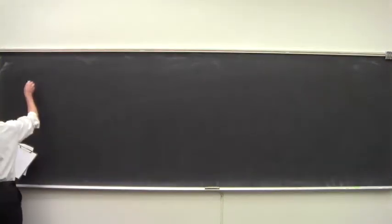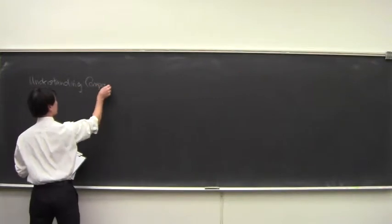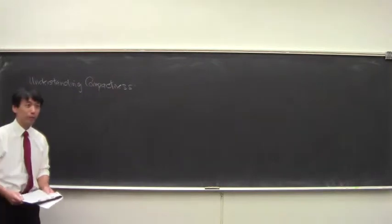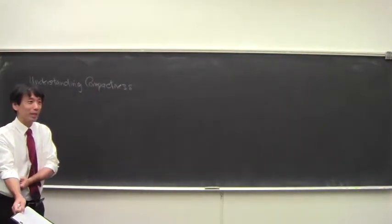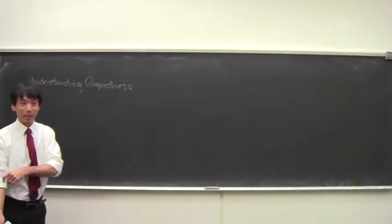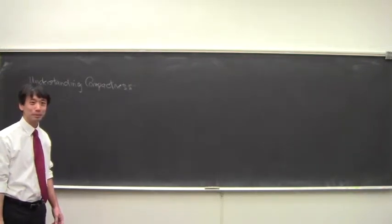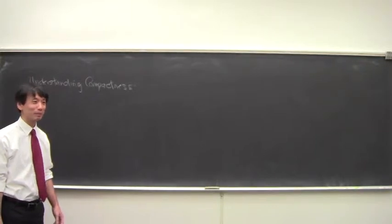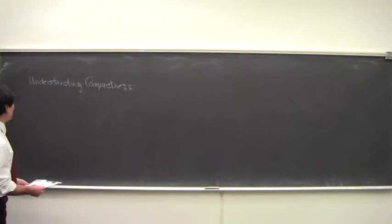This second-to-last section is about understanding compactness. What do we know so far? Does anybody remember anything about compact sets after the break? If a set is compact, it's bounded, right?